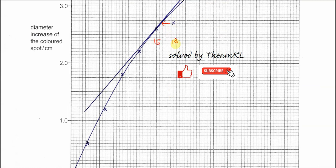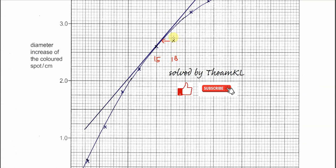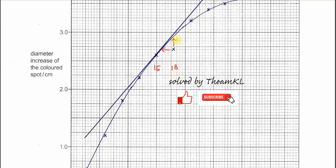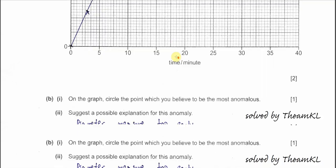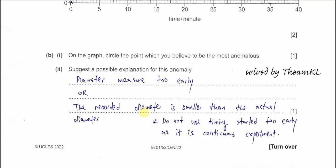Or you can use another direction here. At 18 minutes, it's supposed to be here. So what is measured is lower than expected. That's why we have this answer: the recorded diameter is smaller than the actual diameter.